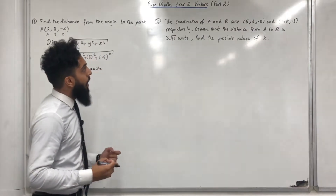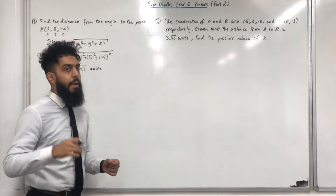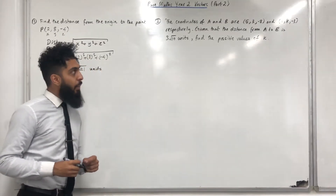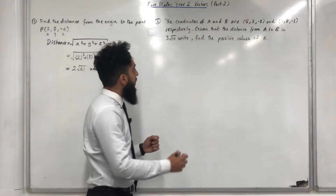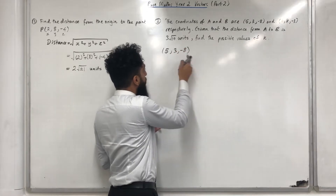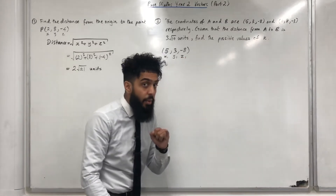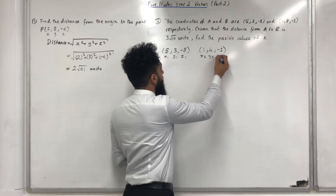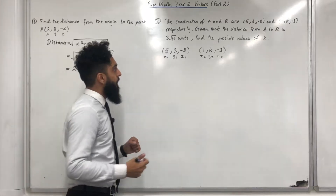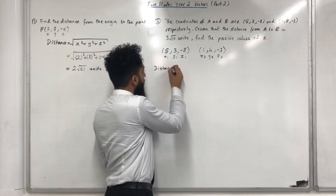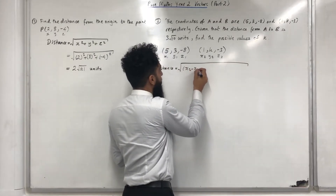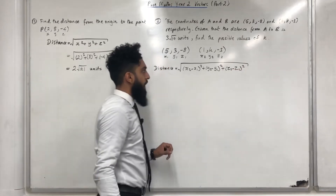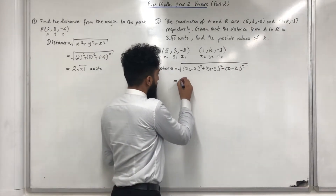Question number 2: The coordinates of A and B are (5, 3, minus 8) and (1, k, minus 3) respectively. Given that the distance from A to B is 3 square root 10 units, find the possible values of k. The first point is (5, 3, minus 8), labelled x1, y1, z1. The second point is (1, k, minus 3), labelled x2, y2, z2. The distance formula is: distance equals square root of (x2 minus x1) squared plus (y2 minus y1) squared plus (z2 minus z1) squared.